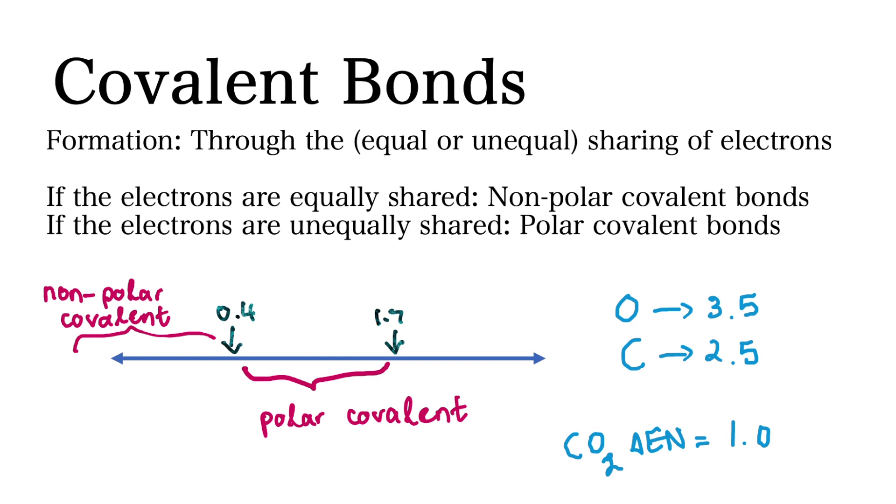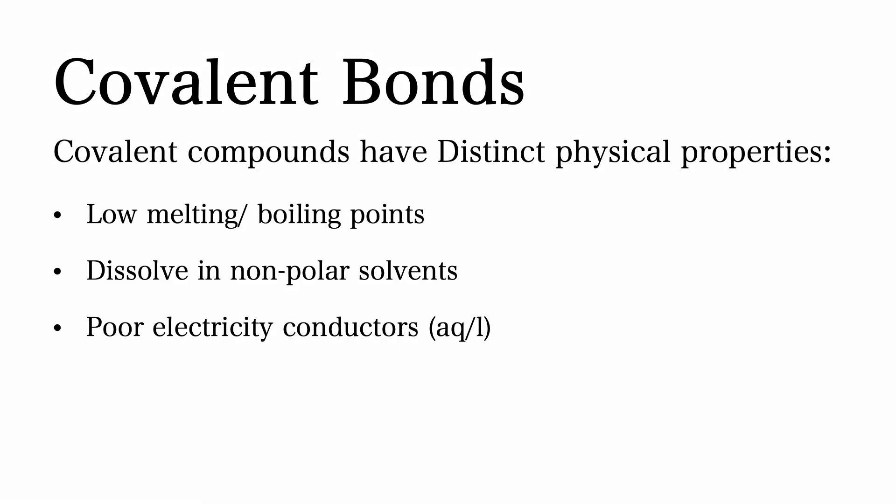Since oxygen has an electronegativity value of 3.5 and carbon has an electronegativity value of 2.5, the electrons are unequally shared between the atoms, with the electrons being more closely associated with oxygen. Similar to ionic bonds, covalent compounds have distinct physical properties.